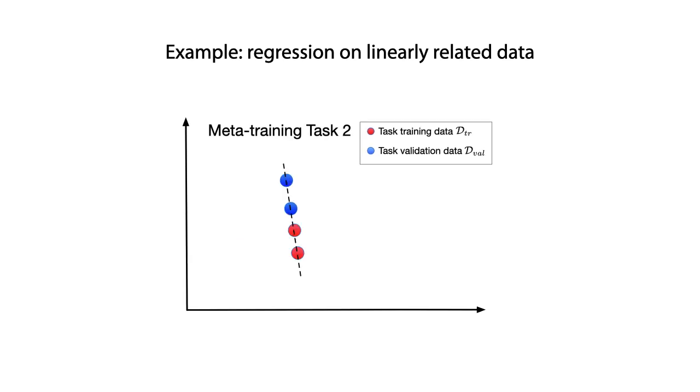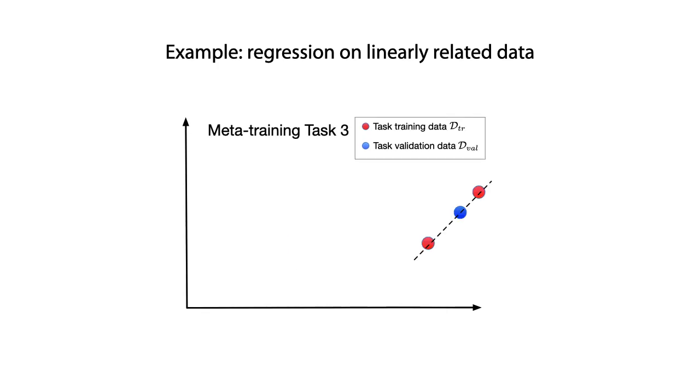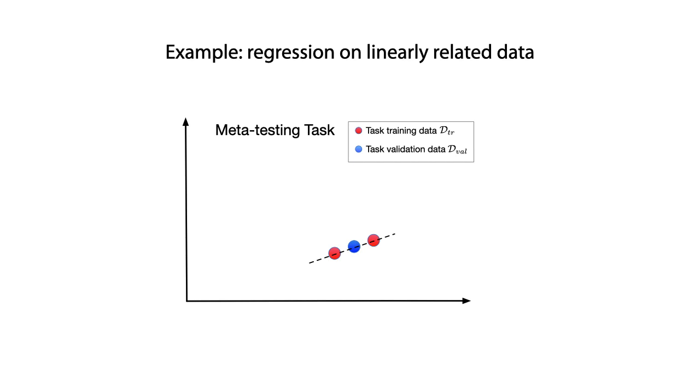The metalearning is then trained on multiple related tasks, like this one and this one. When it comes to meta-testing, we want the model to learn a new function with just a few training examples.